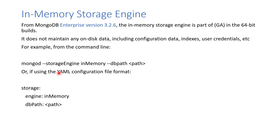There is also the MongoDB In-Memory storage engine, available for the Enterprise edition. It is faster because it does not maintain anything on disk — all data, indexes, and user credentials are kept in memory. To start MongoDB with this engine, use the command: mongod --storageEngine inMemory, and provide the db path, or use a YAML configuration file.